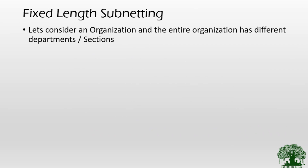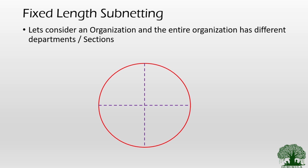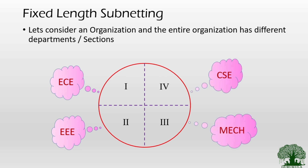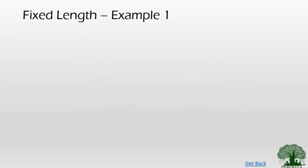Getting into fixed length subnetting, let us consider an example. Consider an organization — let's take RMK CET college — divided into departments. The engineering section has four departments: ECE, EEE, Mechanical, and CSE. These departments will be divided into different networks. Theoretical perspective alone won't help us understand fixed length subnetting, so we will go through examples.